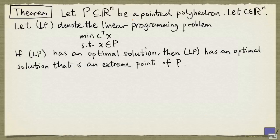Clearly if P is not a pointed polyhedron, we cannot have optimal solutions that are extreme points. For example, if you look at this linear programming problem minimizing x_1 plus x_2 subject to x_1 plus x_2 at least 1, then this problem has infinitely many optimal solutions and none is an extreme point.